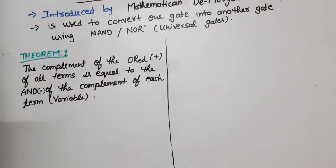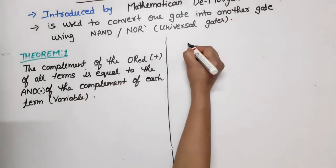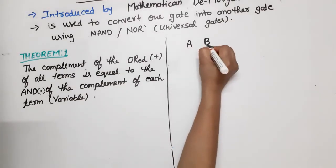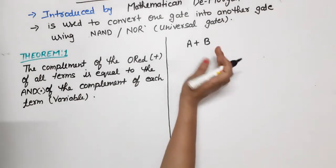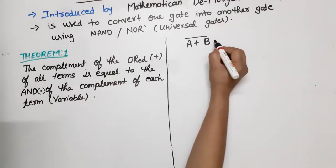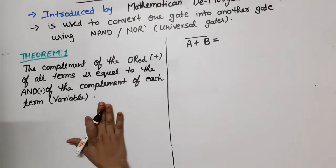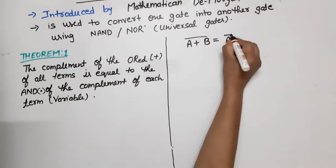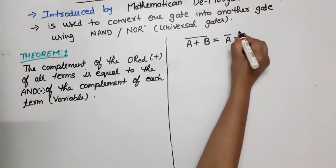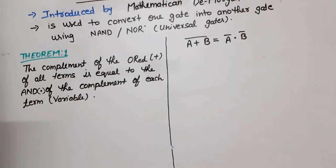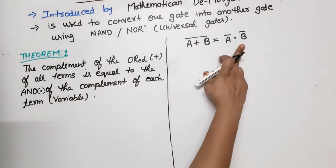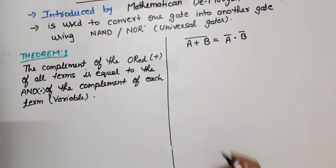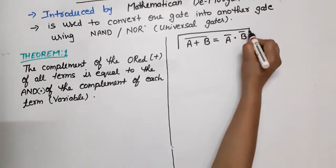If we write the theorem in the form of variables with two variables A and B, then the OR of these two variables will be A plus B, and the complement of this OR function will be (A plus B) bar. According to the theorem statement, this is equal to the AND of the complement of each term. So we take the complement of each term and then AND them. This is Theorem 1 of De Morgan's theorem.